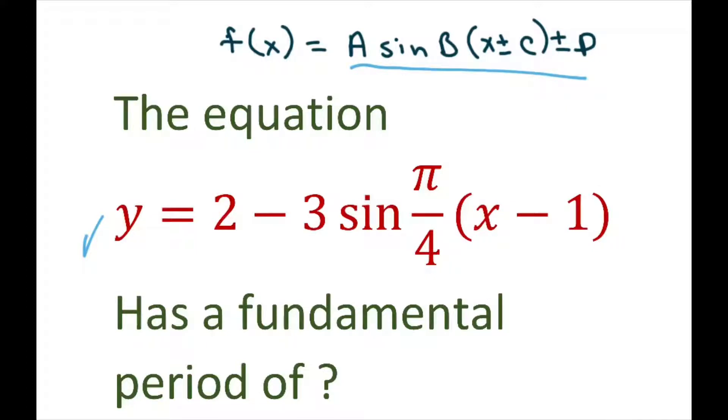So basically, D is right here—that's your vertical shift. A is your amplitude. This is a reflection. B is what we're going to use for the period part, and this is your phase shift, the shift to the right by 1.